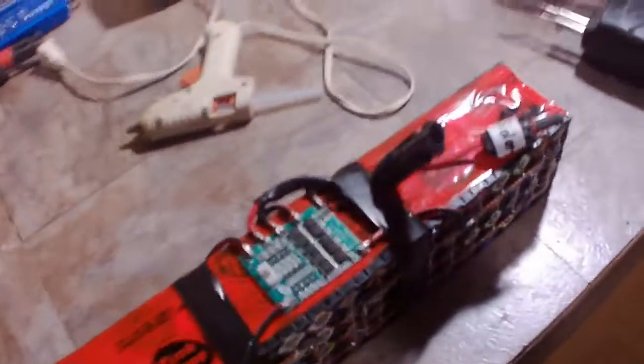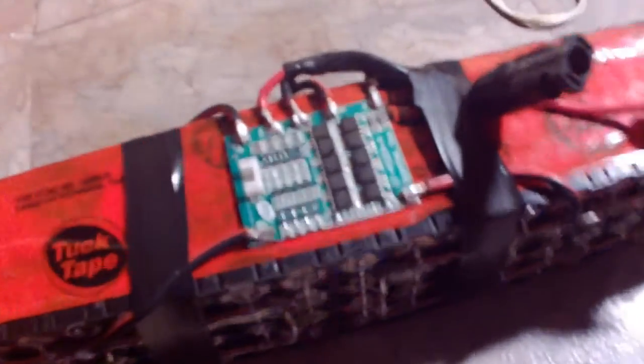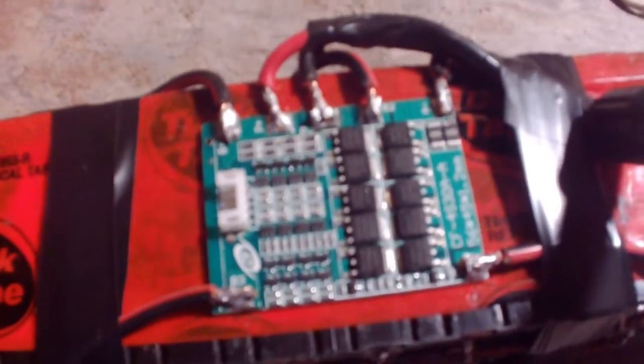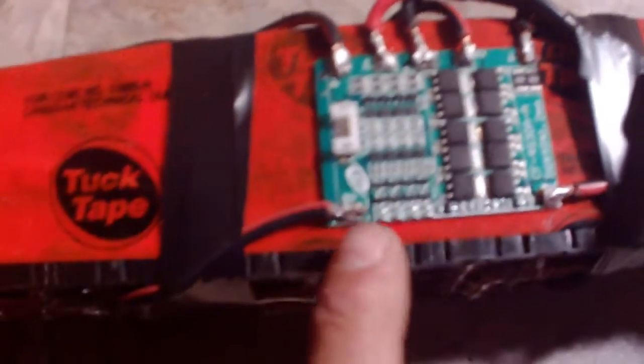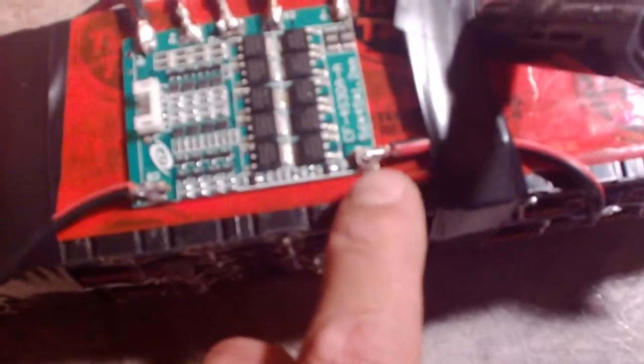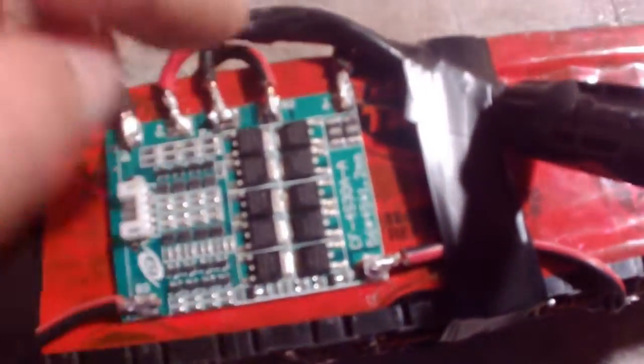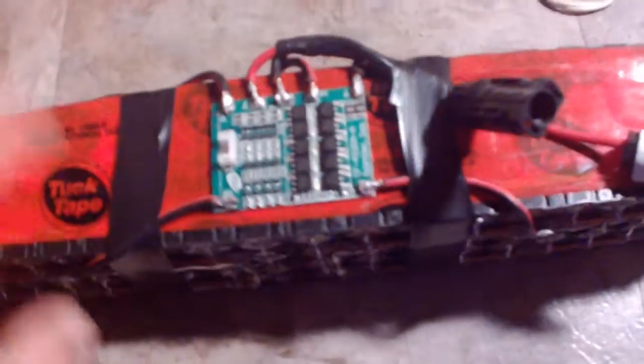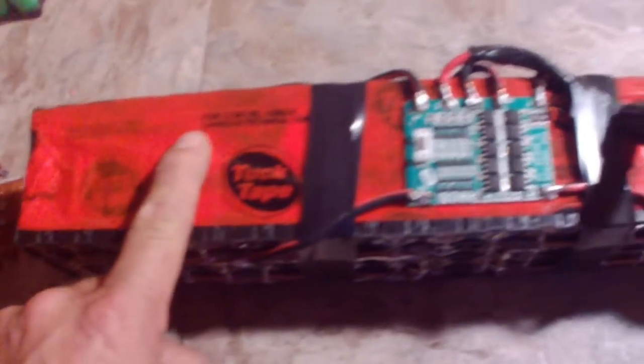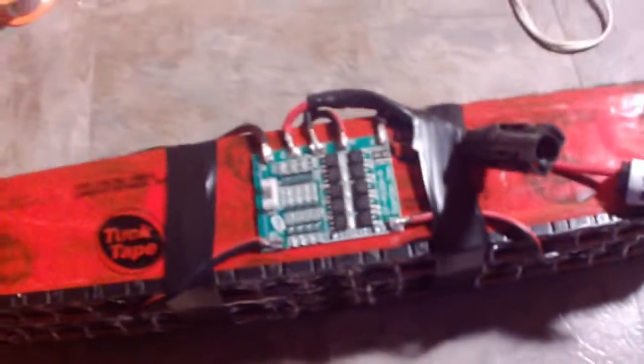So here's the same pack. Taped up the sides on it, put the BMS on it. The BMS, if you look close, it's just a small circuit board. Comes off eBay, five bucks. It's a four-string circuit board. And this one is battery three, this one is battery one, this one is battery two, this one is battery negative, and this one is the battery positive. And these two leads are the charge and discharge leads. So BMS installed, tuck tape wrapped around this side just to keep it intact and hold it together, and a little bit of black electrical tape wrapped around the wires here and there just to keep it in position.